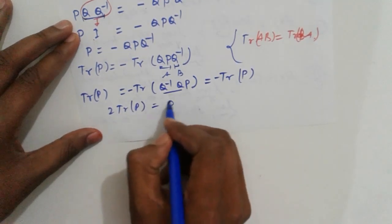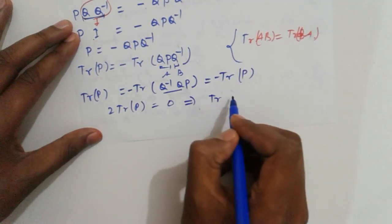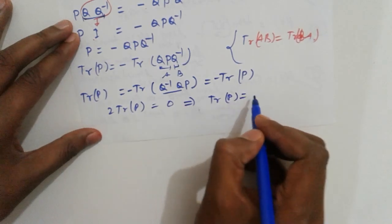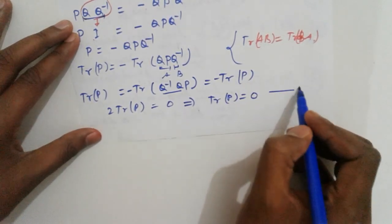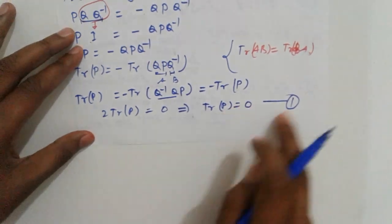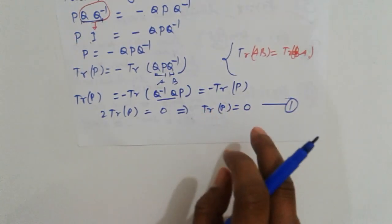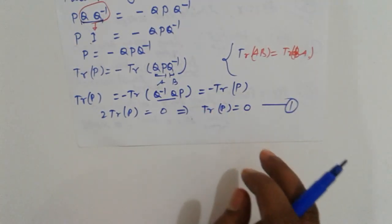This implies that trace of P equals zero. So suppose that is equation 1: trace of P equals zero. Similarly...